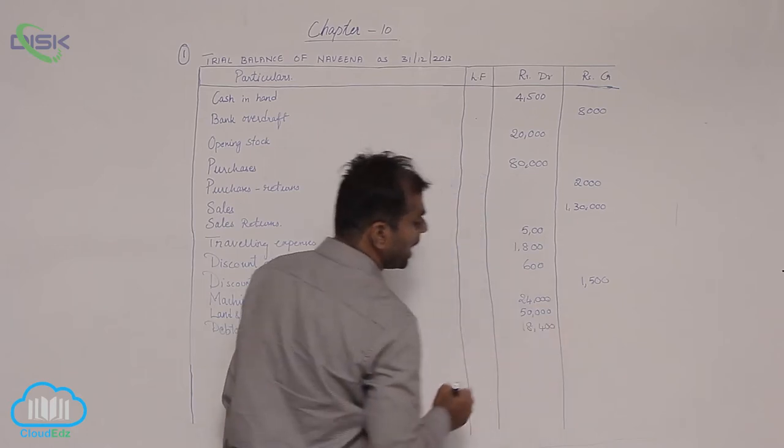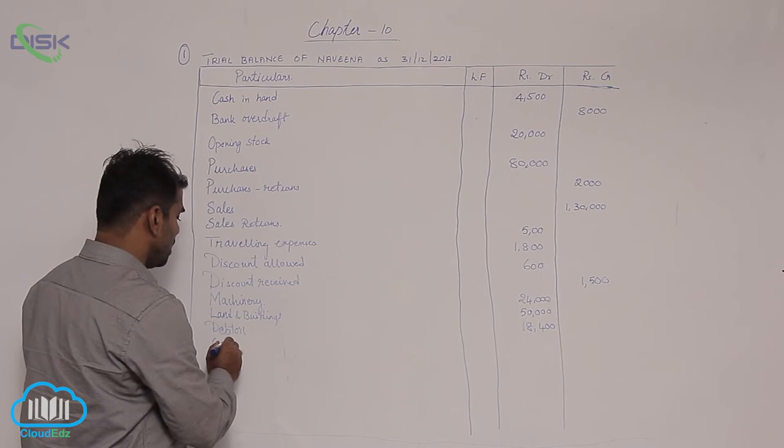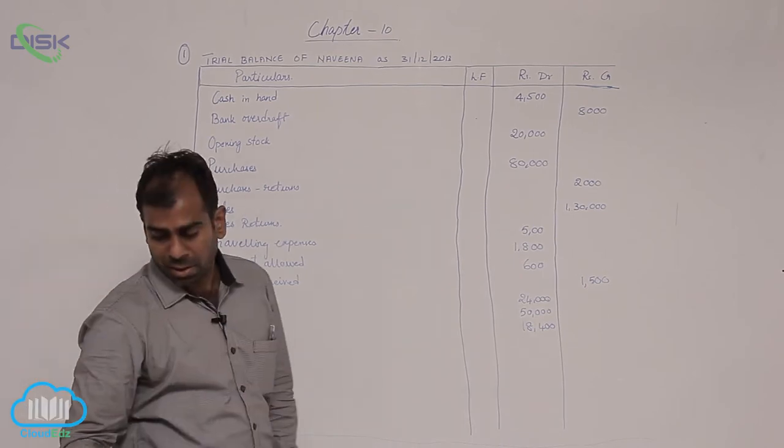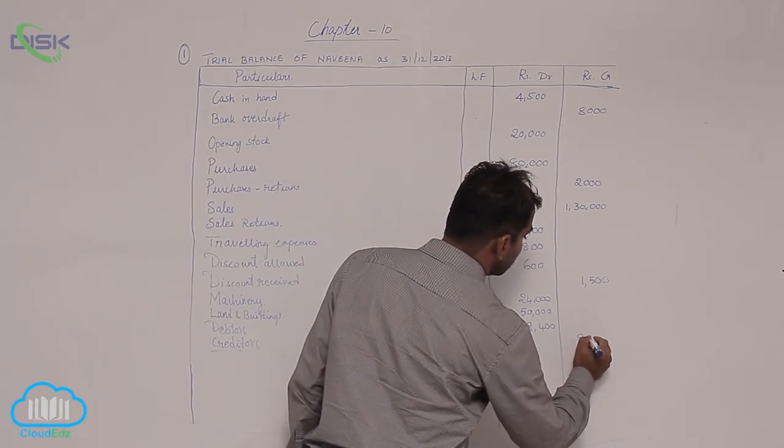Then you have your creditors. So creditors show credit balance of 8,500.